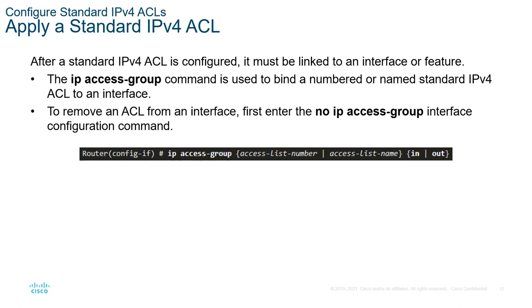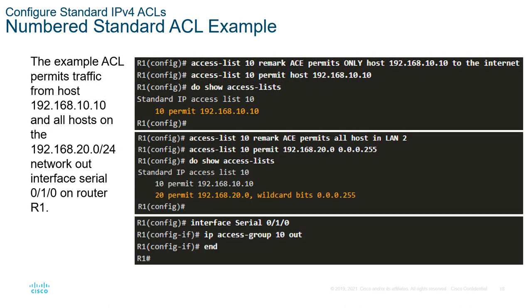To apply an ACL, we use 'ip access-group', assign it the appropriate name or number, and then specify either 'in' or 'out'. This is done on an interface. If you want to apply this access list as it enters ingress of the interface, you do 'in'. If you want to apply it as it leaves the interface, it would be egress — you apply it as traffic goes out the interface. We have labs verifying that we know how to do this.